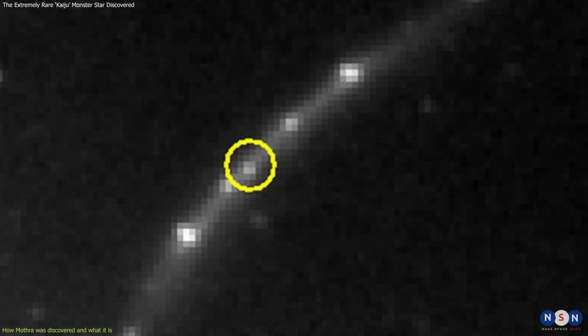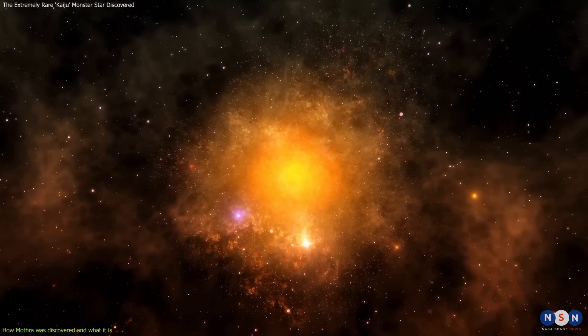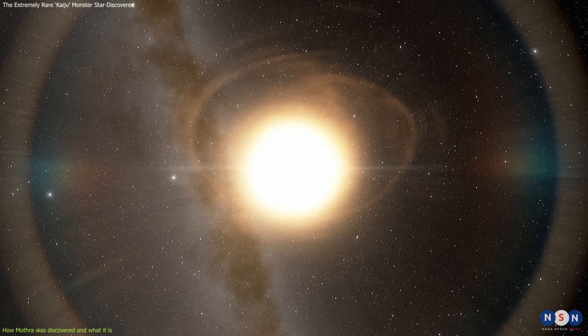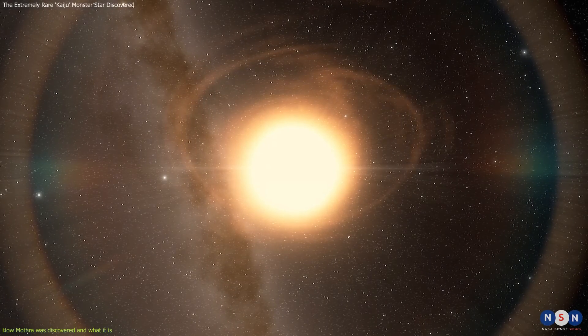However, this star is even more extreme than most red supergiants because it has a very low surface gravity and a very high surface temperature. These features make it very unstable and prone to losing mass through powerful winds.